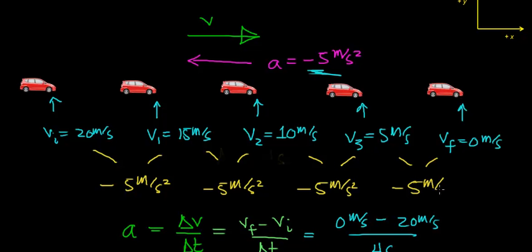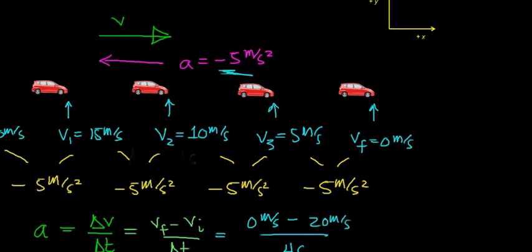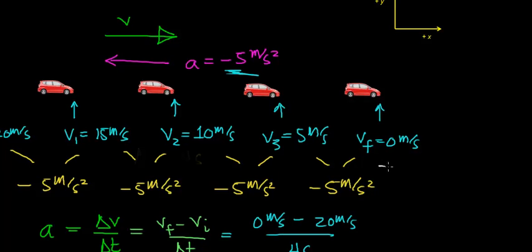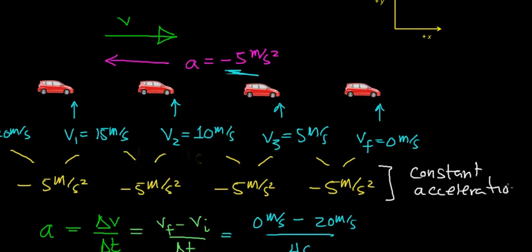So this is what it means for an object's acceleration to be constant. This is going to be constant acceleration — the rate at which the velocity changes stays the same. In this case, the velocity is going to decrease by negative 5 meters per second every single second.